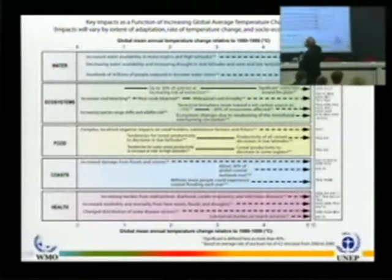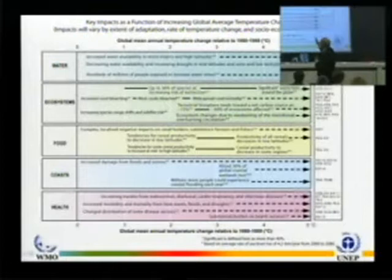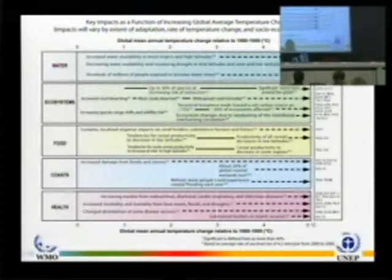Food supply. We knew, but now we know much more, how cereal productivity in low latitudes will tend to decrease, even with a small amount of warming. Starting at one degree, you see there's a tendency for a decrease already.